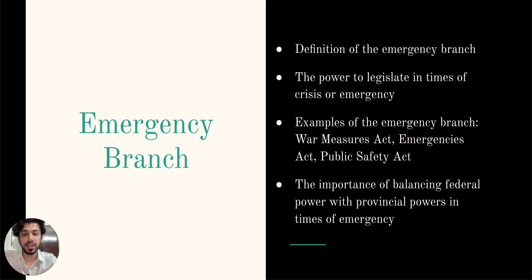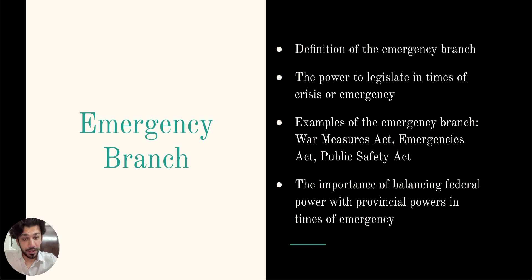Emergencies that have been recognised as valid grounds for exercise of POG power include war, apprehended insurrection, and inflation. One key characteristic of the emergency branch of POG is that it is temporary in nature, meaning federal legislation enacted under the emergency branch is only intended to address the specific emergency at hand and is not intended to be a permanent solution. In conclusion, this power is temporary and intended to address specific emergencies at hand.